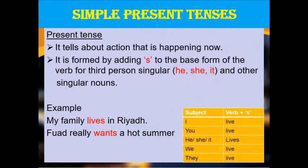Let's look at the first tense, which is the simple present tense. It tells about actions that are happening now. It is formed by adding s to the base form of the verb for third person singular and other singular nouns. For third person singular, you can use a pronoun such as he, she, or it to replace the nouns. For example, in a sentence: My family lives in real. The word 'lives' is a verb in present tense — we added s to the base verb 'live' to make it present tense.